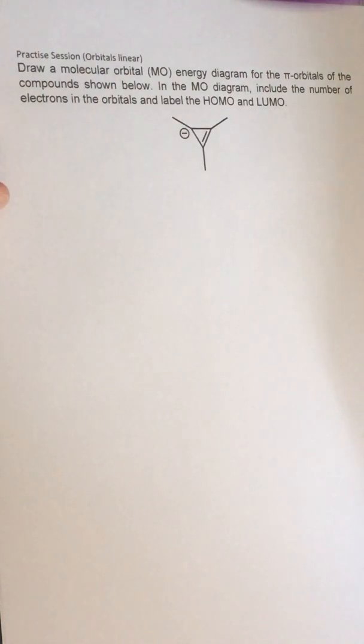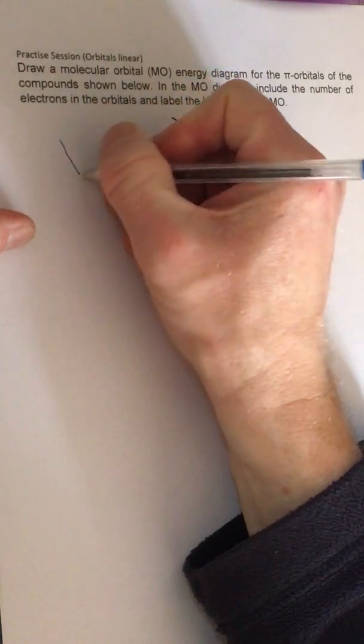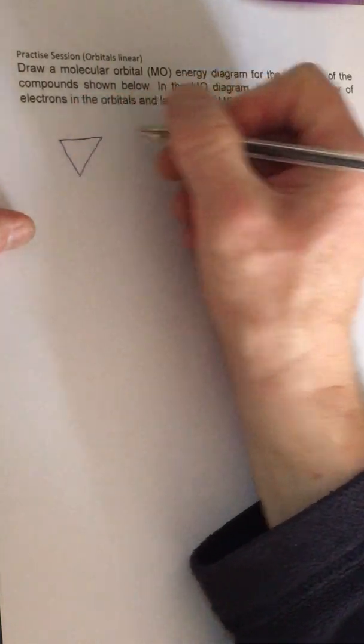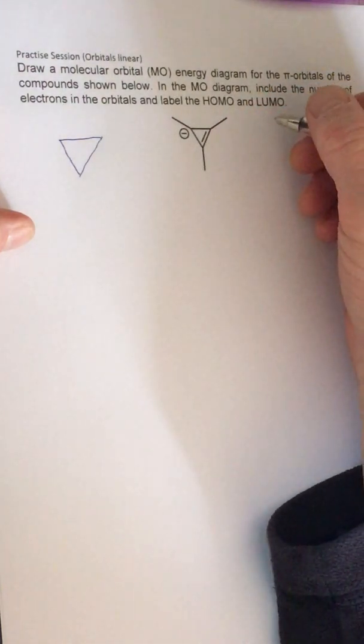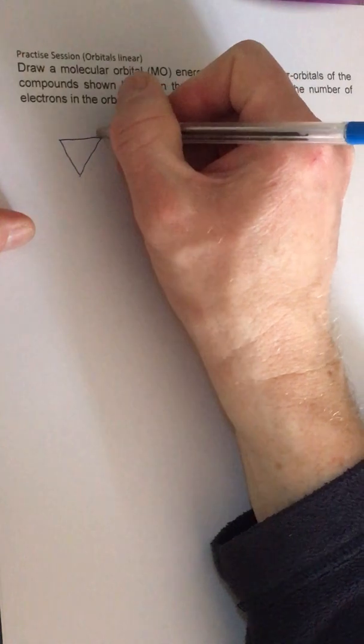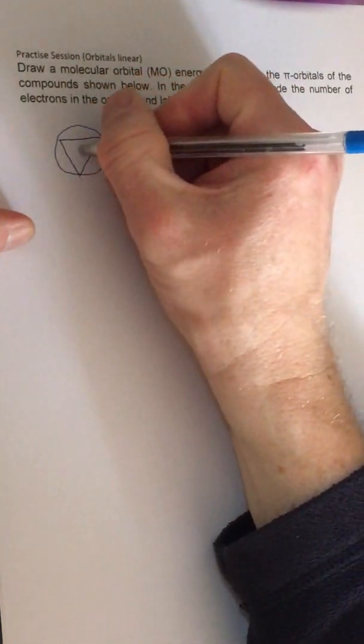Remember, to get the picture of where the energy levels will be, we draw the shape of the molecule—a triangle in this case—and put it in a circle called the Frost circle. The middle of the circle we draw a line.